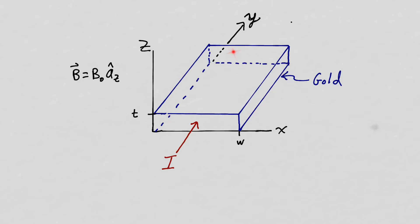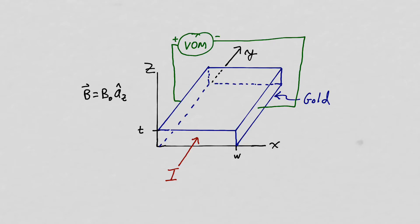Hall took a piece of gold that he formed into a rectangular shape, so he knew the thickness and the width of his piece of gold. With the coordinate axis as shown, he had a current flowing through the gold in the Y direction, and he applied a uniform magnetic field in the Z direction. Hall observed that with the current flowing, he would measure a voltage across the width of the sample in the X direction.